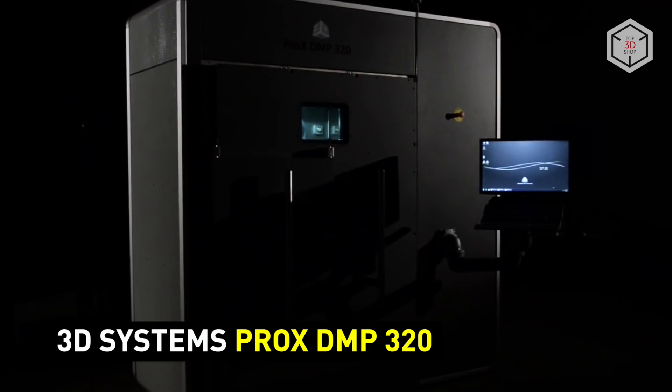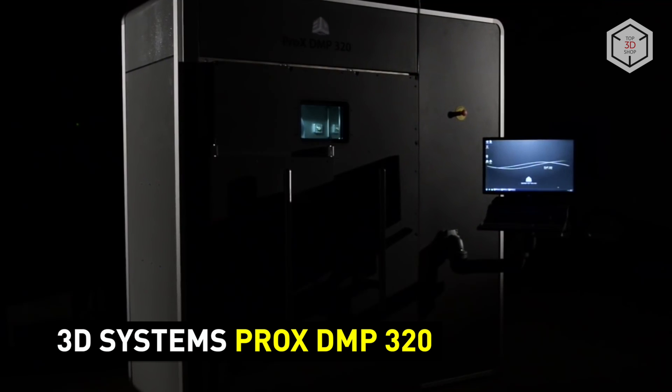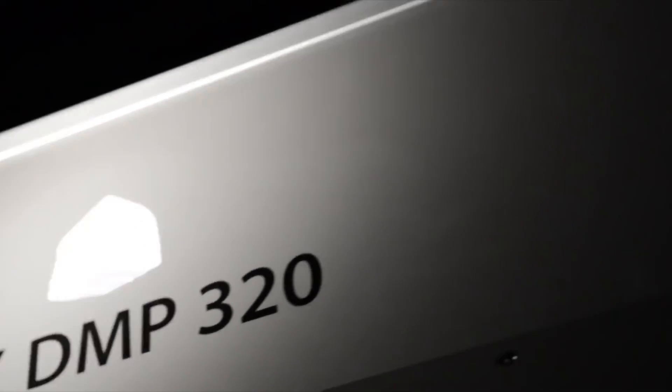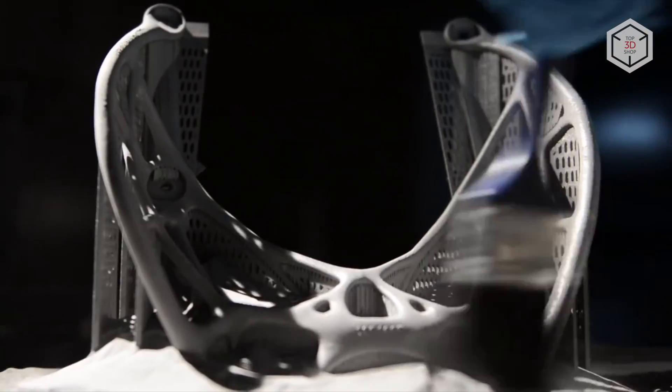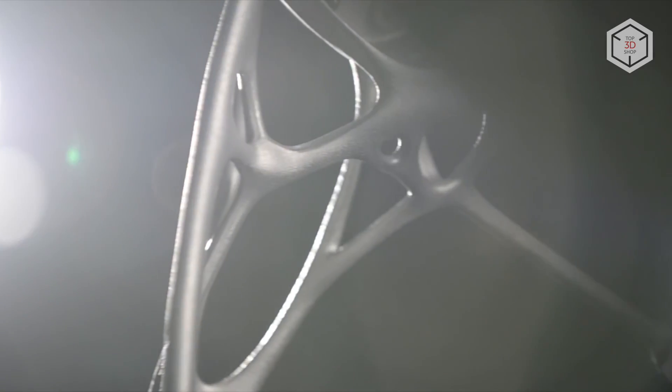The Pro-X DMP320 is a high-performance SLM printer from 3D Systems. The device uses technology called direct metal printing and features a build volume of 275 x 275 x 420 mm. The machine prints with various alloys of titanium, nickel, steel, and provides a minimum layer thickness of 30 microns. Due to its modular design, the system allows for really fast material changeover. The unit is fully automated and ready to work 24-7.